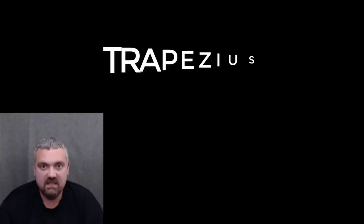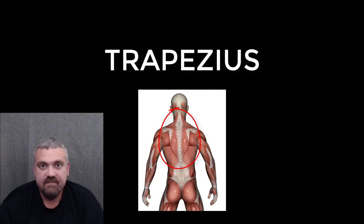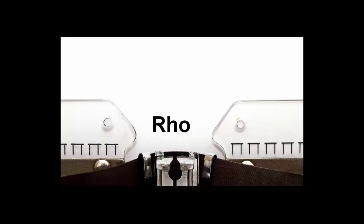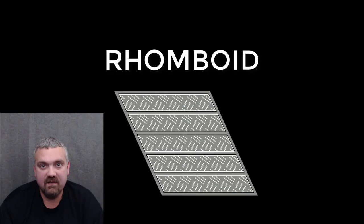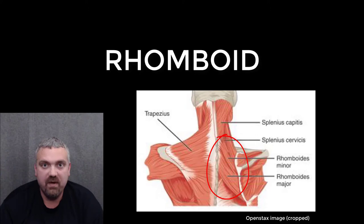Trapezius describes a trapezoid or kite-like shape — the trapezius muscle of your back is the key example. Rhomboid means parallelogram, so your rhomboid major and rhomboid minor muscles would be the key examples there.